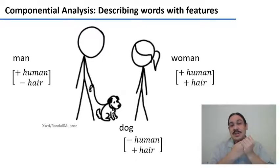So you could use features to describe the meanings of the words in a certain universe. For example, you could use these features to distinguish between these three words.